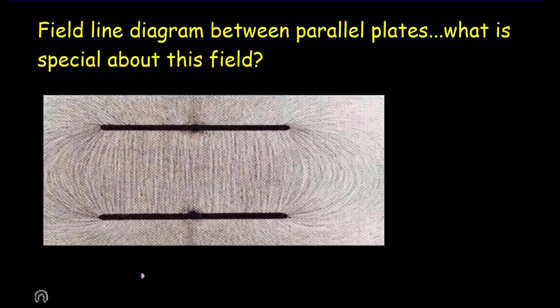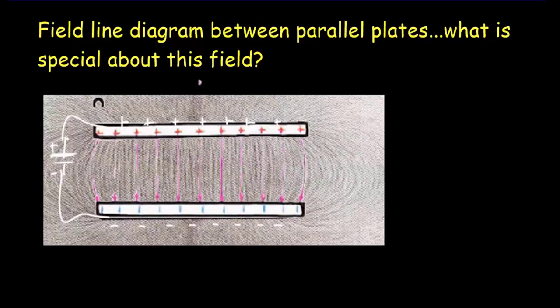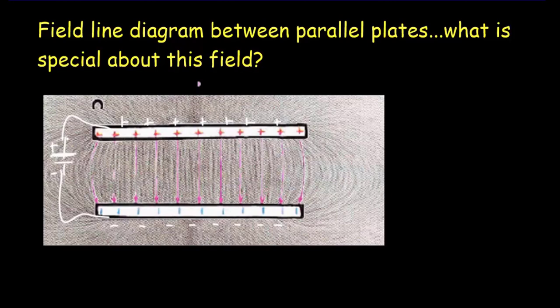There is a uniform field inside parallel plates. We have two plates connected across a battery — the top plate positive with positive charges accumulating on it, and negative charges accumulating along the bottom plate. With the parallel plates, we get a uniform field. The field lines have equal spacing between them, always the same, and they're always parallel, pointing from the positive plate to the negative plate. You do get some end effects — the field is no longer uniform as you go beyond the edges.